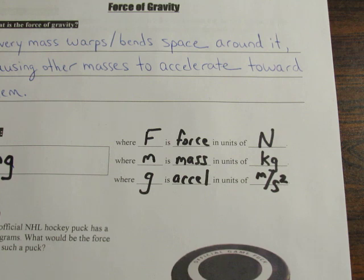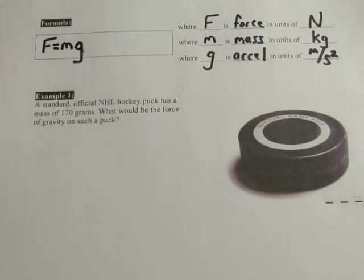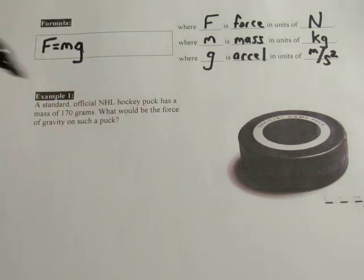Let's do a very easy example. The first example is just a standard calculation for force of gravity on an object. A standard regulation hockey puck has a known mass of 170 grams, and the question is what would be the force of gravity on such a puck?